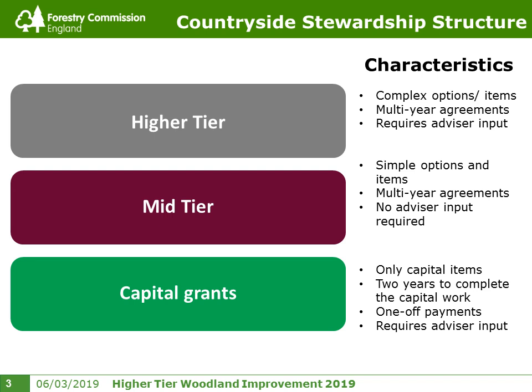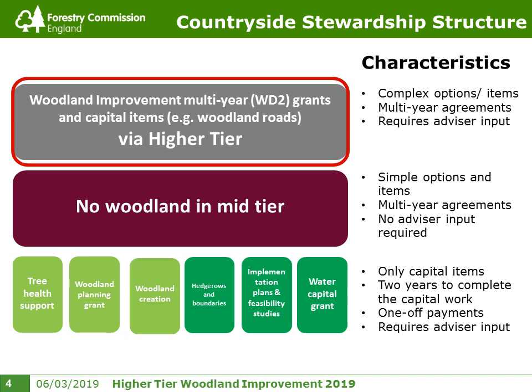There are also capital items available in the higher tier. To translate that into more real terms: the higher tier woodland improvement offer is a multi-year offer under option WD2, with capital items available for things like woodland roads and fencing. There's no woodland elements in the mid-tier — that's all agro-environment. Capital grants available under countryside stewardship include support for tree health issues, preparation of woodland management plans, woodland creation, and maintenance payments.